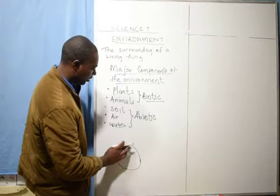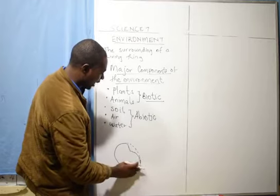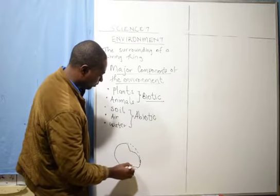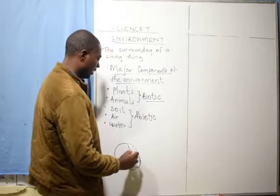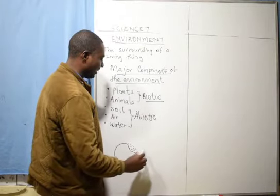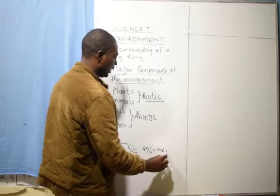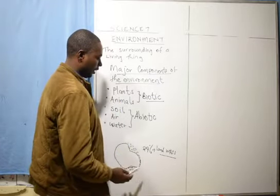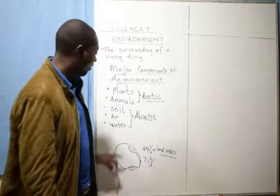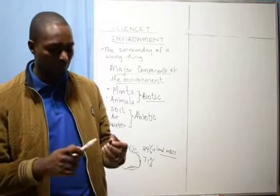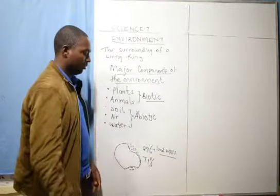On the earth's surface, the earth comprises large land mass and water. The water takes the largest percentage of the earth. The dry land is around 29%, while water takes 71%. Therefore, if I ask you which component takes the largest part of the earth's surface, the answer is water.